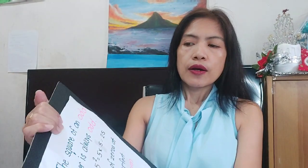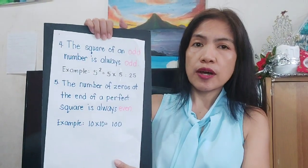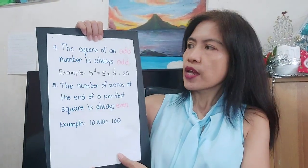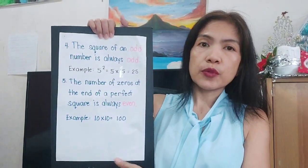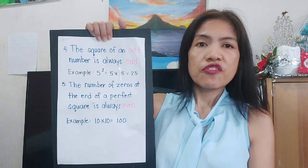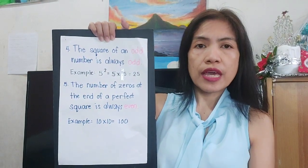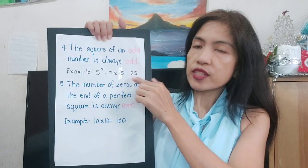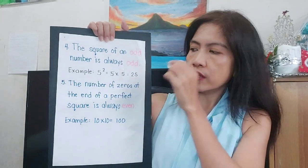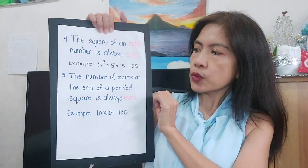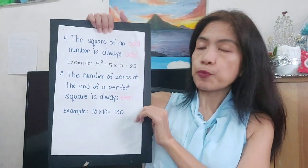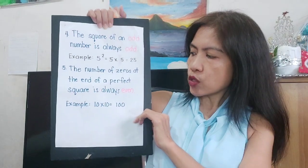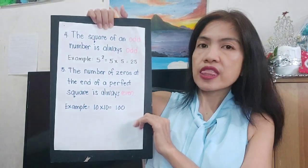Let's add another property: the square of an odd number is always an odd number. For example, 5 squared is 5 times 5 equals 25. So 5 is odd, and 25 is also an odd number.